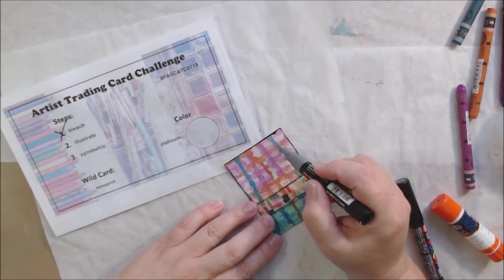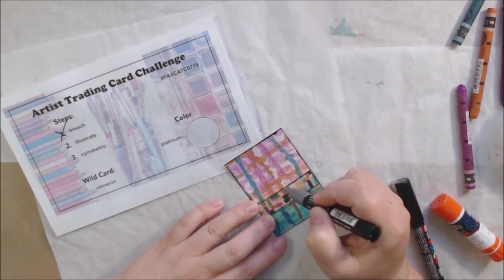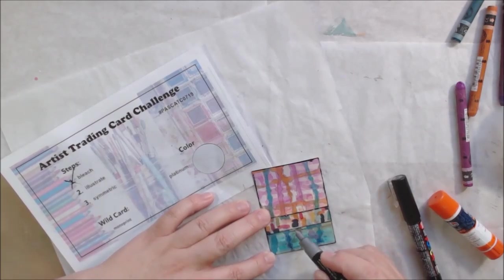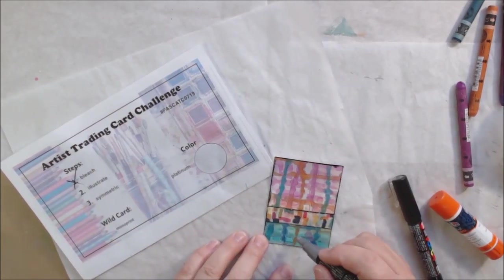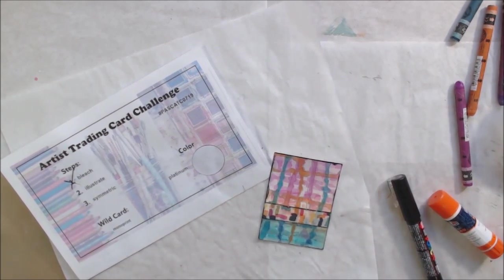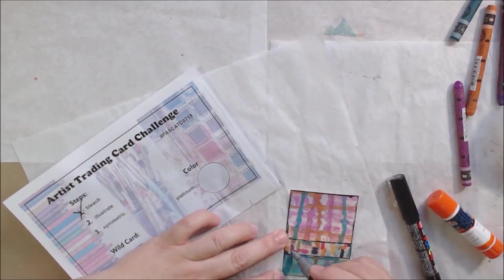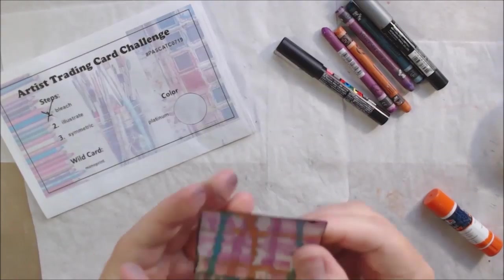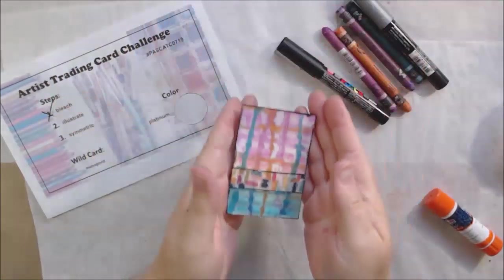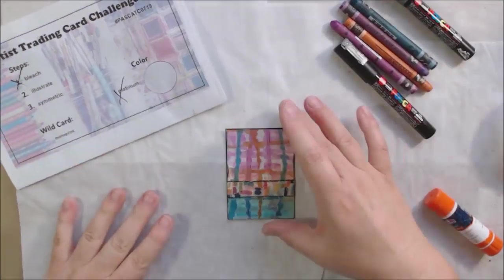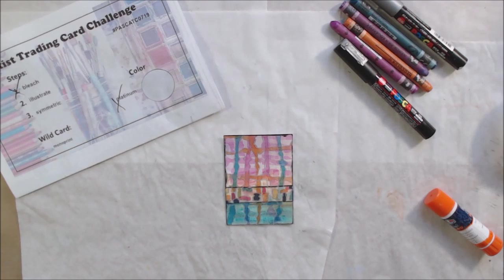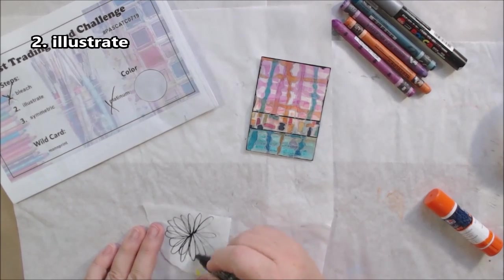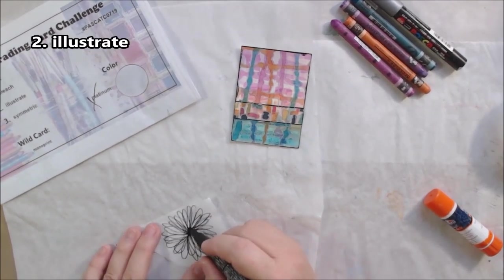Then back to the color platinum. Remember we were talking about that earlier, I said I don't have a product in my studio that's that color but I think that platinum is very close to metallic silver. So I'm using my silver Posca pen and I'm just kind of going along the edges of the lines and accenting them with the silver pen to add the platinum color. I also at the end off-camera used it as splatter but I closed the camera before I finished the last couple things.